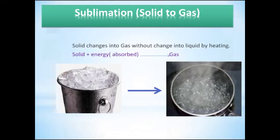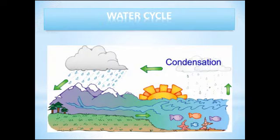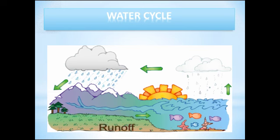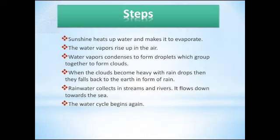Now we will talk about water cycle. It is a cyclic process. It involves different steps. Sunshine heats up water and makes it evaporate. The water vapors rise up in the air. Water vapors condense to form droplets which group together to form clouds. When the clouds become heavy with rain drops they fall back to the earth in form of rain. Rainwater collects in streams and rivers. It flows down towards the sea. The water cycle begins again.